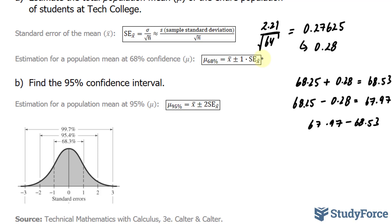And this will give us an idea of where the population mean is with a 95% confidence rating. So I'll take mu of 95% is equal to 68.25 plus minus 2 times 0.28.